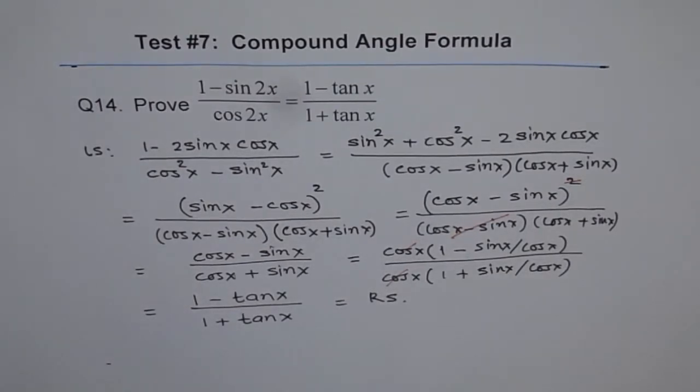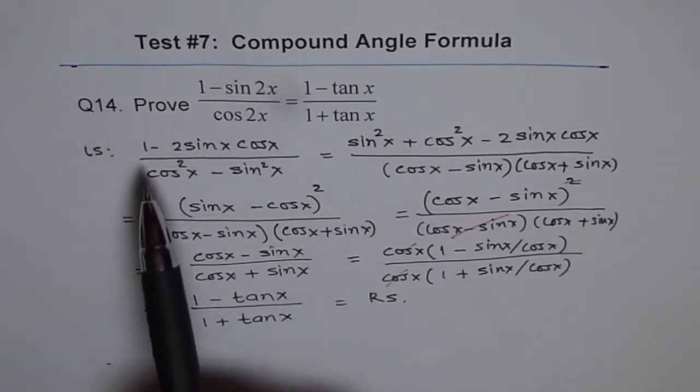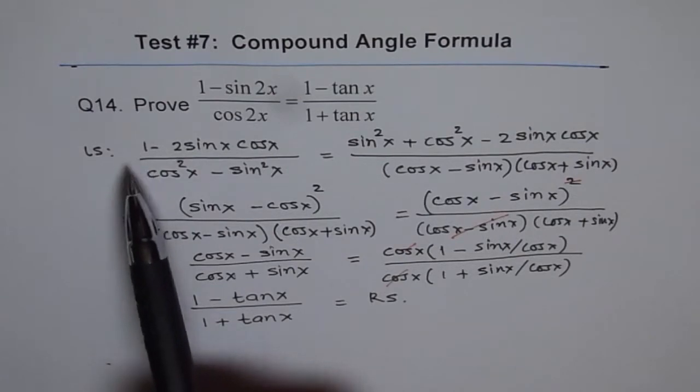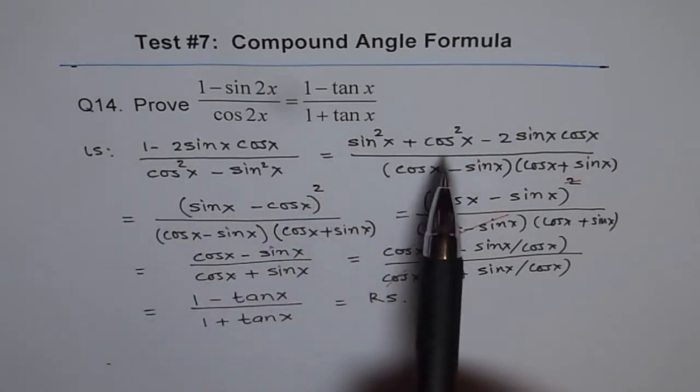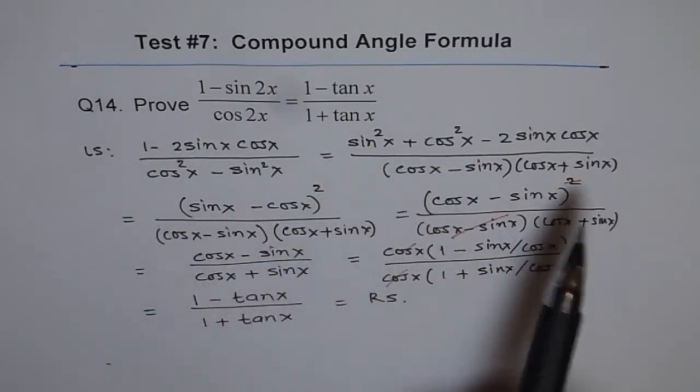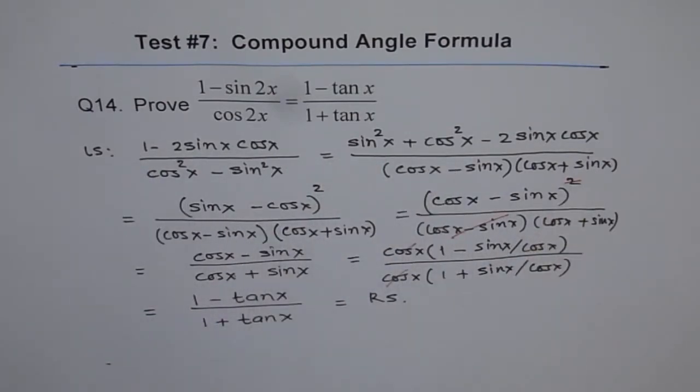The critical step here is to write 1 as sine squared x plus cos squared x, and then use it as a perfect square.